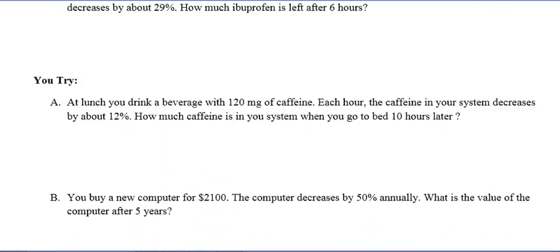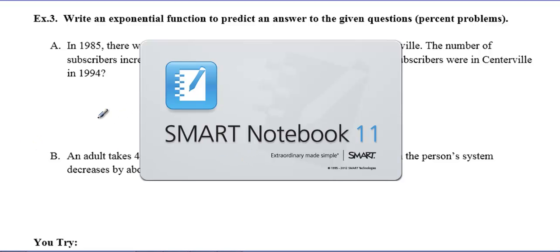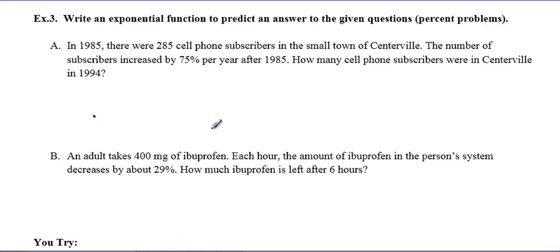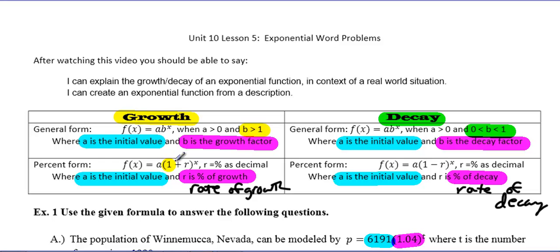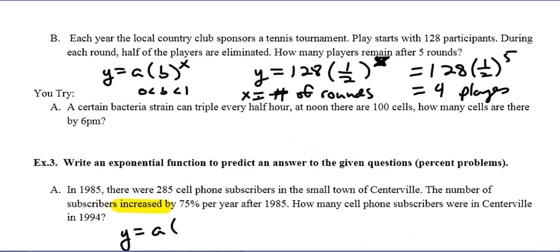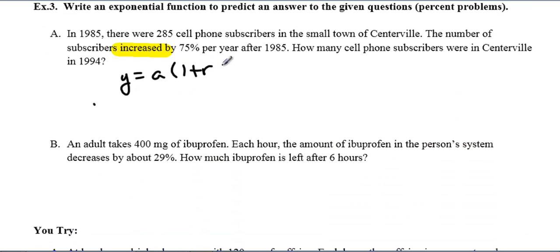We have two examples left. We are asked to write an exponential function and predict, and this time we're dealing with percent problems. In 1985, there are 285 cell phone subscribers in the small town of Centerville. The number of subscribers increased by 75% per year after 1985. That's a huge growth. How many cell phone subscribers are there in 1994? The first thing we want to do is create our equation. I'm using the percent model: y = A(1 + R)^x. We are talking about growth here.